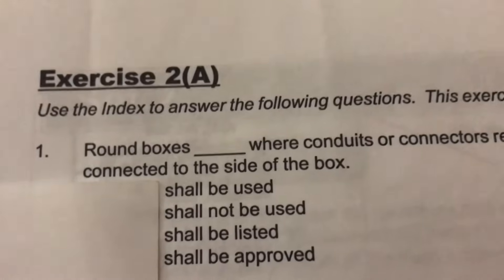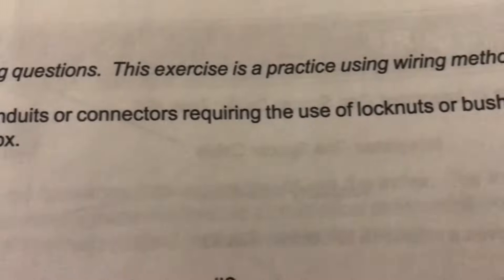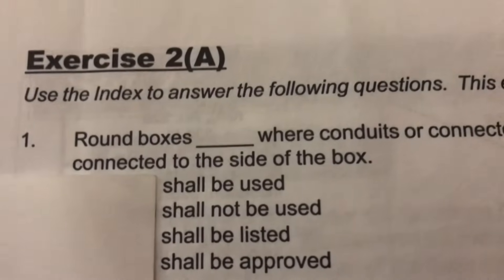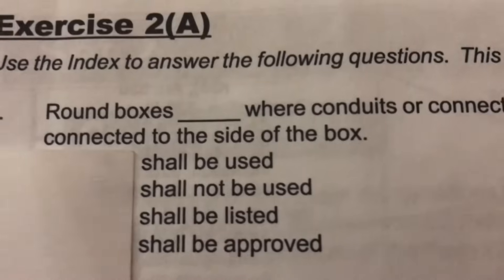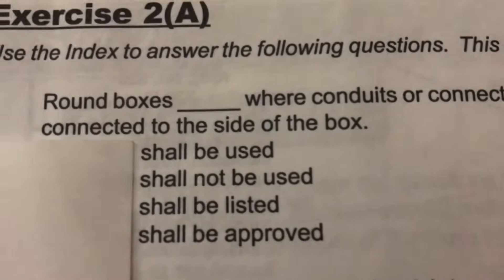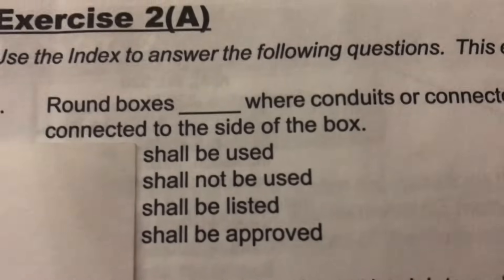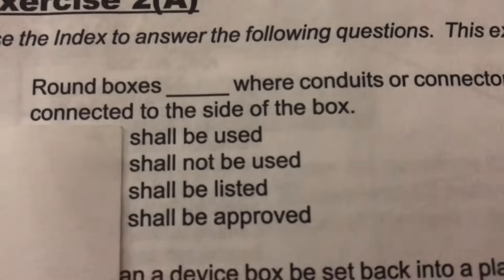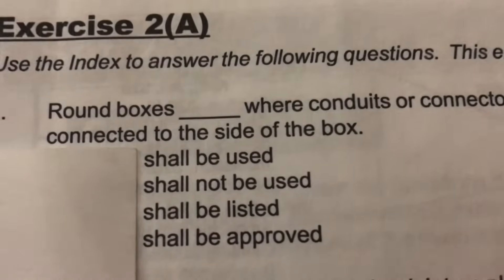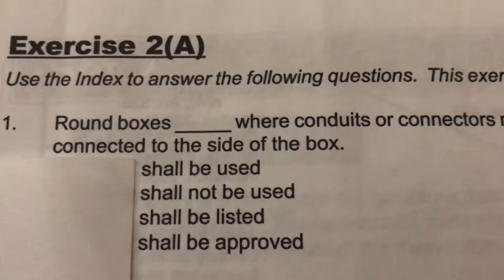Here comes the first question from the study guide: 'Round boxes blank where conduits or connectors requiring the use of lock nuts or bushings are to be connected to the side of the box.' The choices are: shall be used, shall not be used, shall be listed, or shall be approved. The first technique is to look for 'round boxes' and then skim to see which of those answer choices coincides with the text about round boxes, conduits, and connectors.